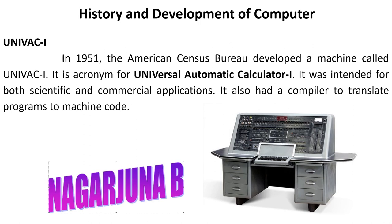UNIVAC I stands for Universal Automatic Calculator. In the year 1951, the American Census Bureau developed a machine called UNIVAC. It was invented for both scientific and commercial applications. It also had a compiler to translate programs into machine code.